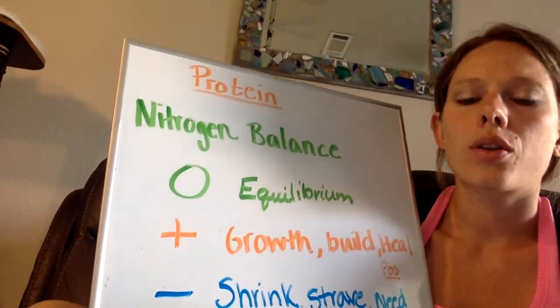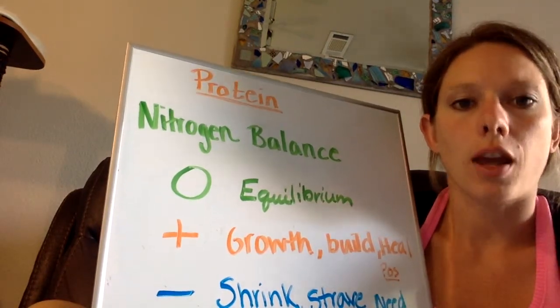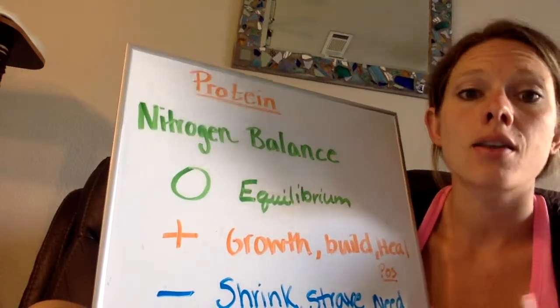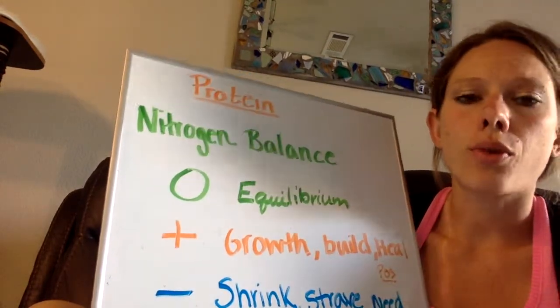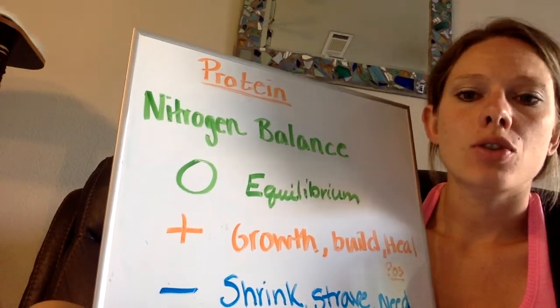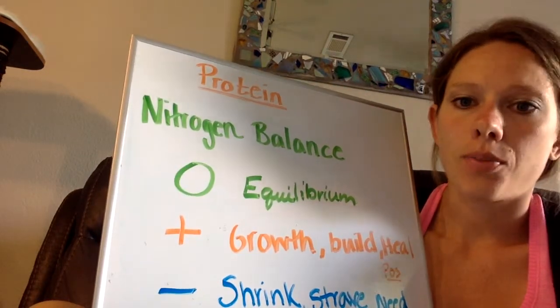We're comparing our intake and output of nitrogen, our nitrogen coming from our proteins, our amino acids, that amine group. So nitrogen balance measures equilibrium comparing intake to output.